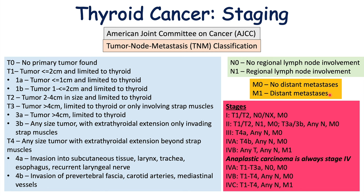Anaplastic carcinoma is always going to be stage 4 — as soon as a patient has anaplastic carcinoma, they are automatically considered to have stage 4 carcinoma with slightly different substaging. Stage 4A is T1 to T3A with N0 and M0. Stage 4B is T1 to T4 with any N and M0. And stage 4C is T1 to T4 with any N and M1.